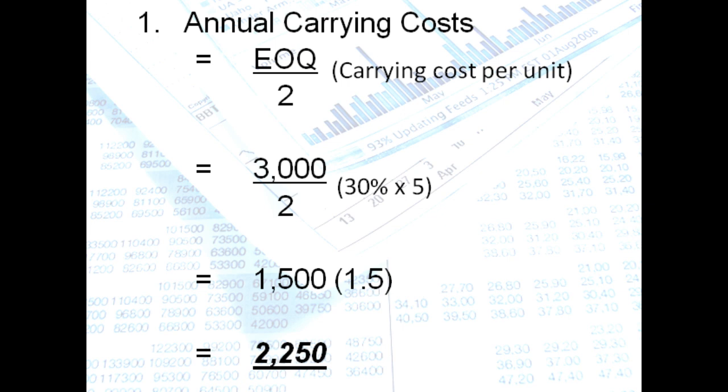So 30% times 5, which is your inventory cost, we arrive at 1.5. 1.5, multiply it by 1,500, you will get 2,250 pesos as your annual carrying cost.